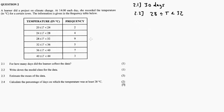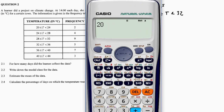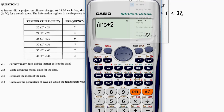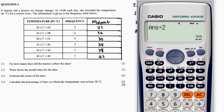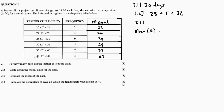Question 2.3 asks us to estimate the mean of the data. The mean is represented by x-bar. To calculate the mean from a frequency table, we need the midpoints of each class. The midpoint is found by adding the lower and upper boundary and dividing by 2. For example, 20 plus 24 divided by 2 equals 22. For the next class, 24 plus 28 divided by 2 equals 26.